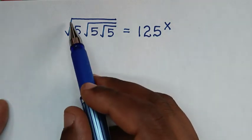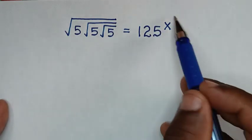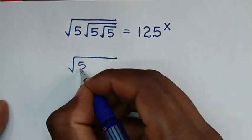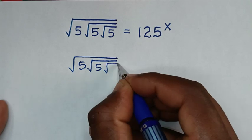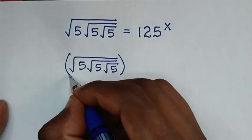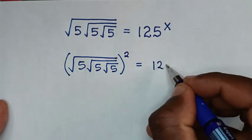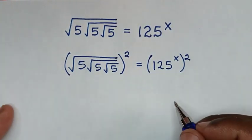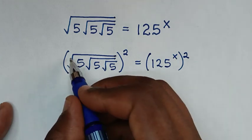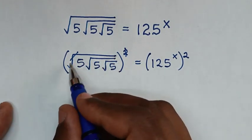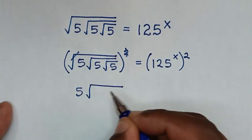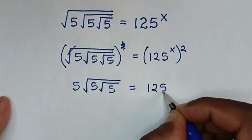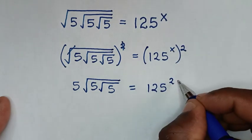In the first step, to remove the outer square root we will square both sides. On the left side we have square root of 5 under square root of 5 under square root of 5, squared. On the right side we have 125 to the power of x, also squared. The square root cancels the square, giving us 5·√(5·√5) = 125^(2x).